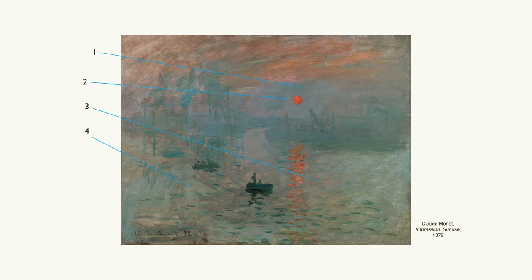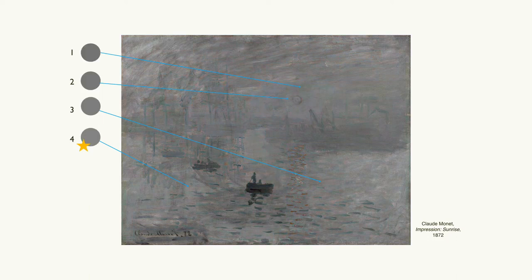Take a look at these four spots — I need your participation again. We're trying to decide which one is the lightest value in this painting. The majority said number four, and let's take a look — it is four. Well done. Area four is the lightest value in the painting, and one is the darkest.